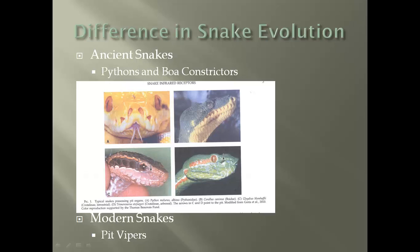Ancient snakes is one category used to describe snakes such as pythons and boa constrictors, and there's a group called modern snakes which includes pit vipers. Pictures A and B are our ancient snakes — a python and a boa — and C and D are our pit vipers. You can see the arrows pointing to the pits on C and D, located between the eye and the nose, whereas the small openings on A and B don't exist on C and D.